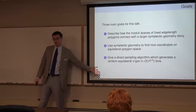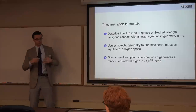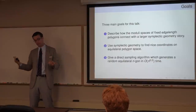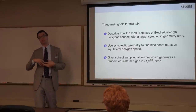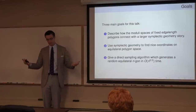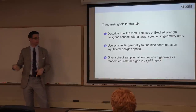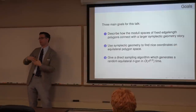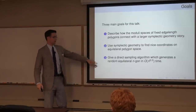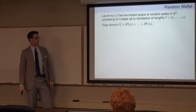I want to talk about how moduli spaces of fixed edge length polygons fit into symplectic geometry, and how to use the symplectic geometry to do interesting things. One of the most useful applications is coming up with really good sampling algorithms. If you're a polymer physicist interested in these random walk problems, you want to understand scaling behavior as N goes to infinity, or how many different knots you see for 1,023 edges — things you can't prove but can approach via Monte Carlo integration if you can draw samples from the space.